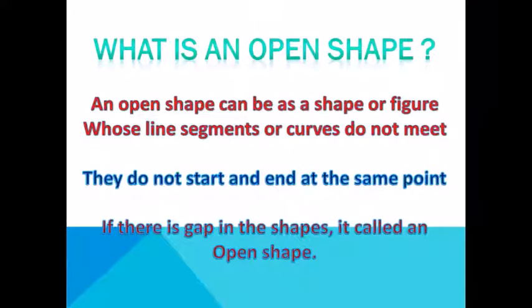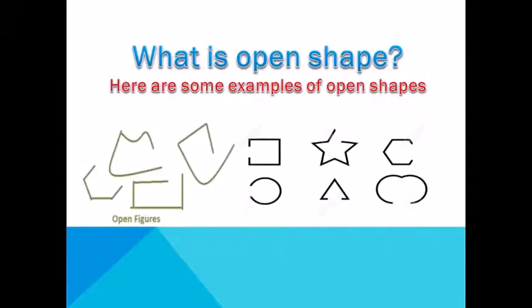Now, what is an open shape? An open shape is a shape or figure whose line segment or curves do not meet. They do not start and end at the same point. If there is a gap in the shape, it's called an open shape.